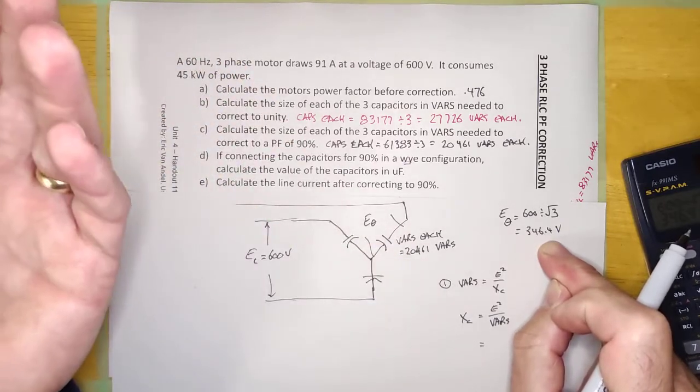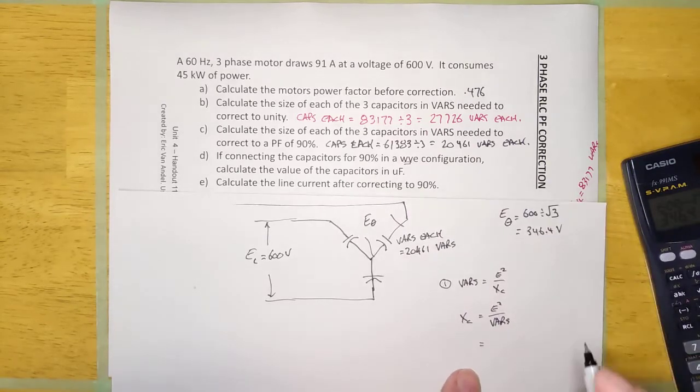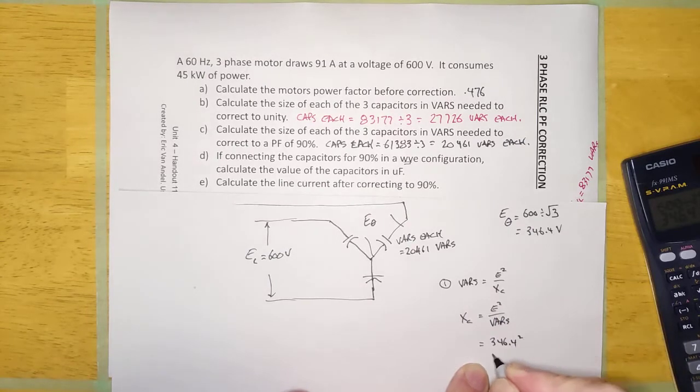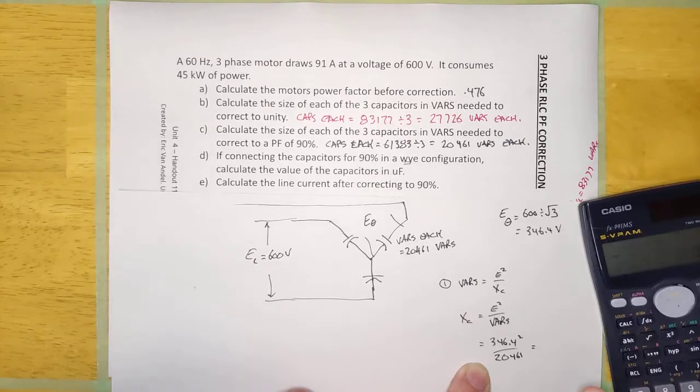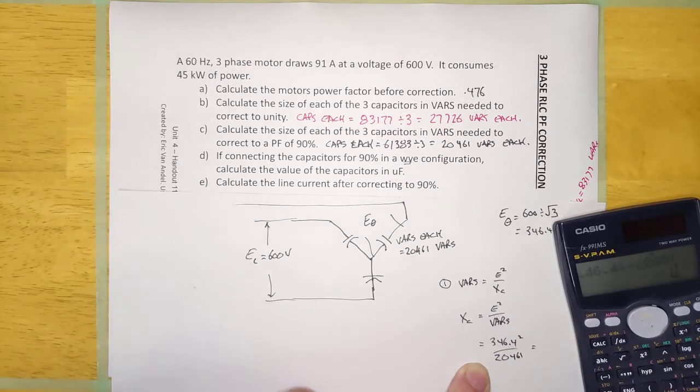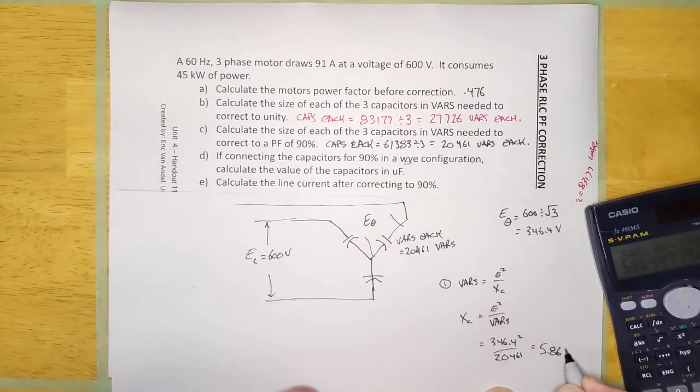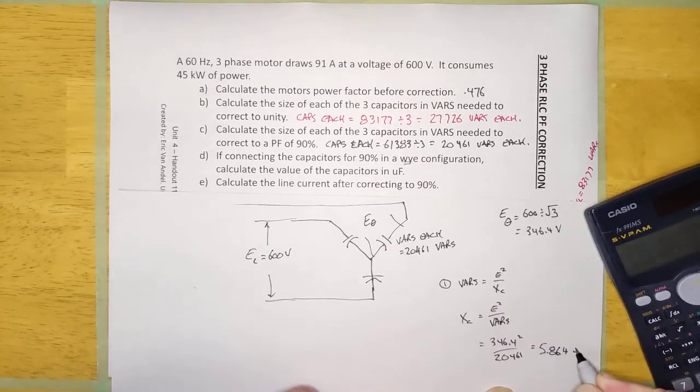So, 346.4 squared over 2461. So, let's try that, 346.4 squared divided by 2461. Looks like they are 5.864 ohms each.